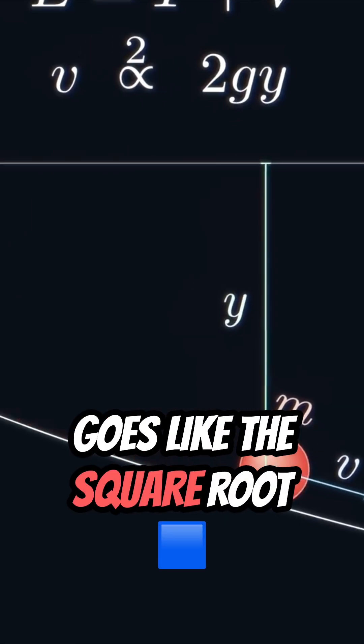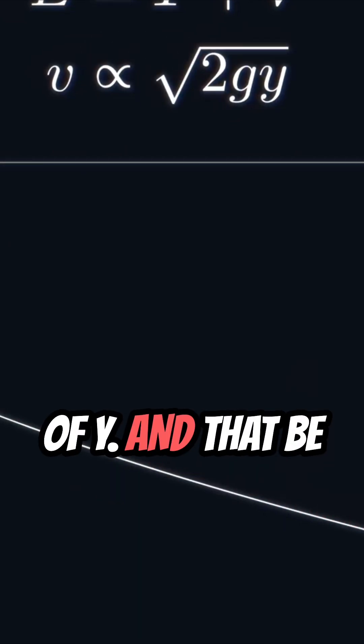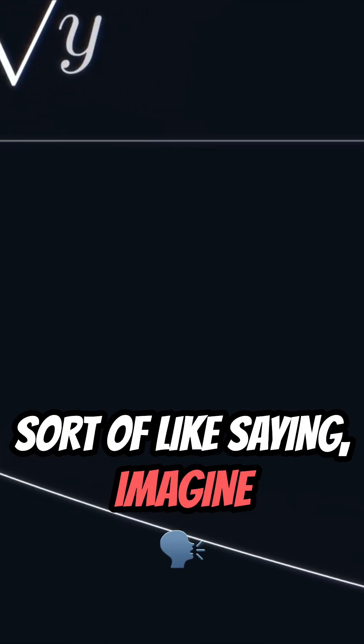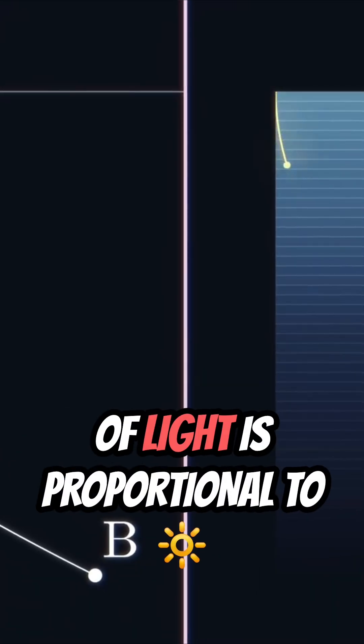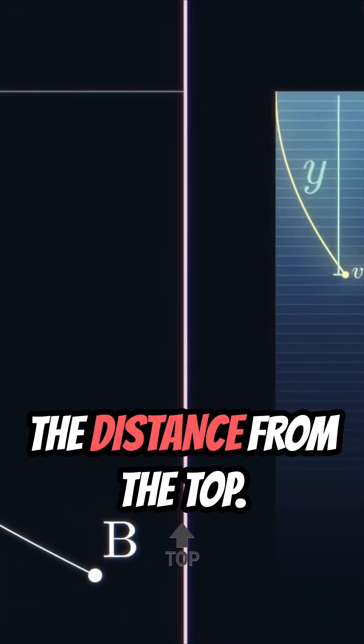So velocity goes like the square root of y. And that'd be sort of like saying, imagine light moving in a way where instead of a constant speed of light, the speed of light is proportional to the distance from the top.